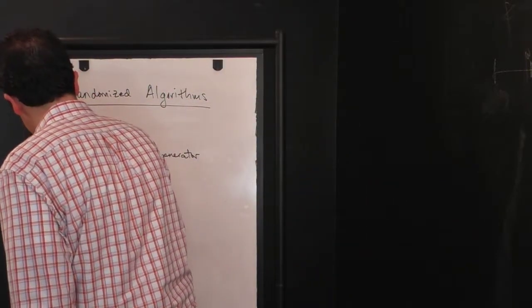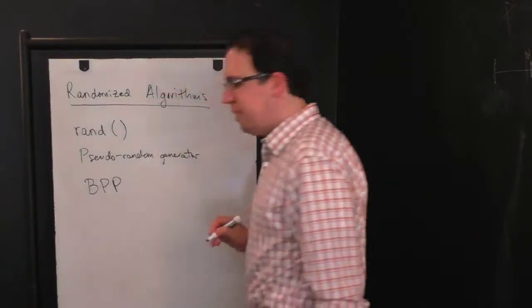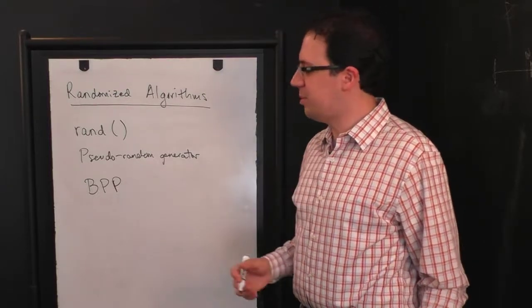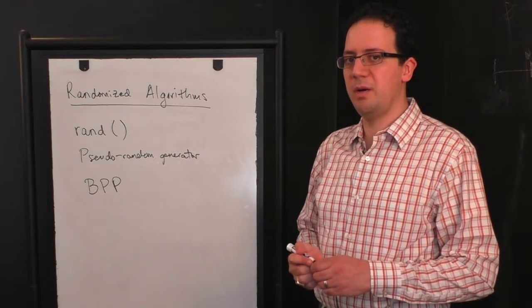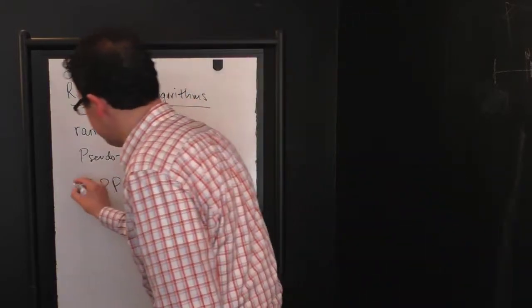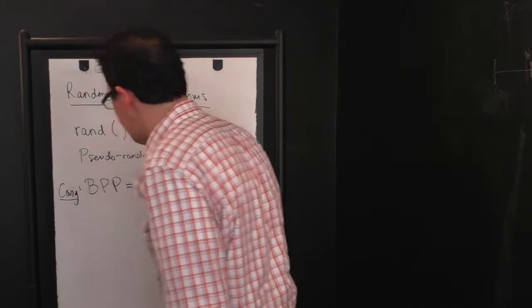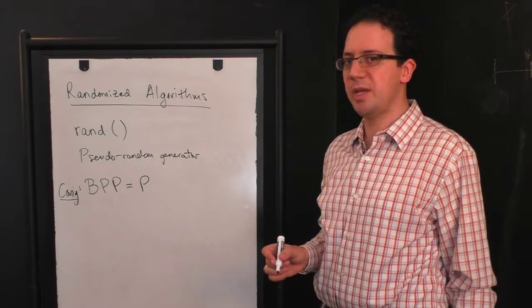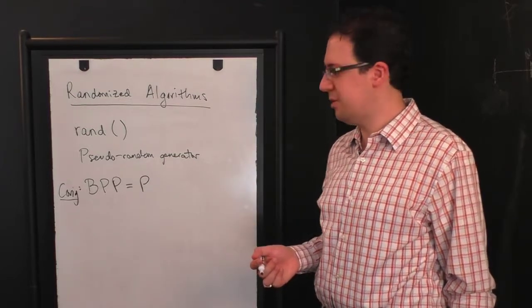There is a complexity class associated with this. So BPP is the name of the class of problems that can be solved in polynomial time by a randomized algorithm. And the conjecture is that BPP equals P. So anything that can be decided efficiently with randomness can actually also be decided efficiently without randomness.